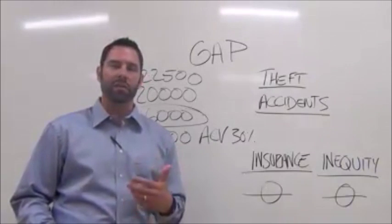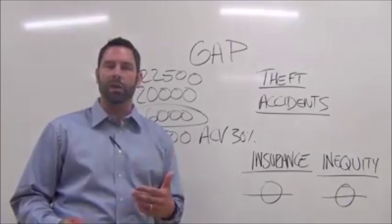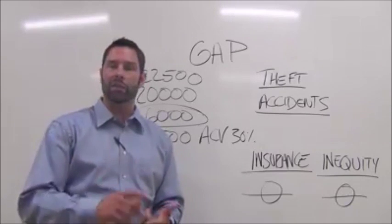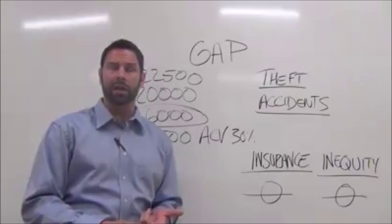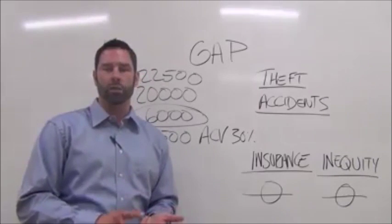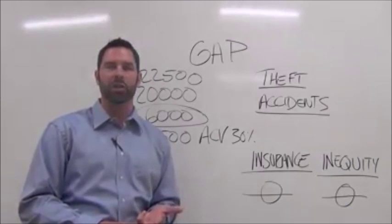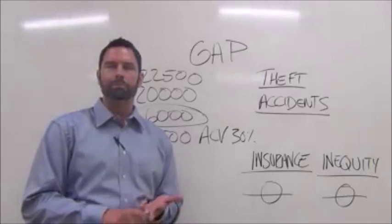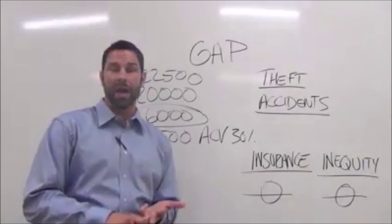70% of the loans that we send to Toyota have it on there. So again, if your vehicle is either stolen or in an accident declared a complete loss, it's Toyota who pays off Toyota. So there's no type of issues with a third party getting involved. And most importantly, that payoff not being made.